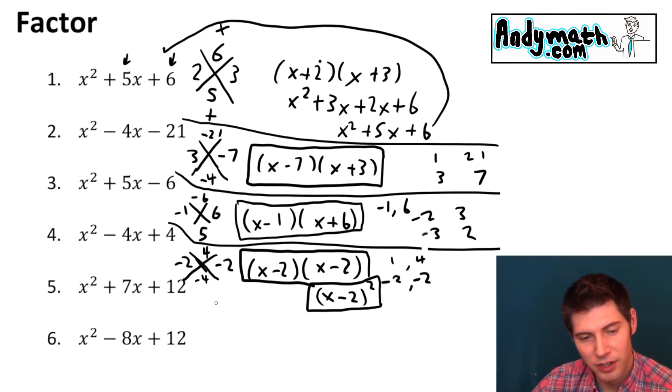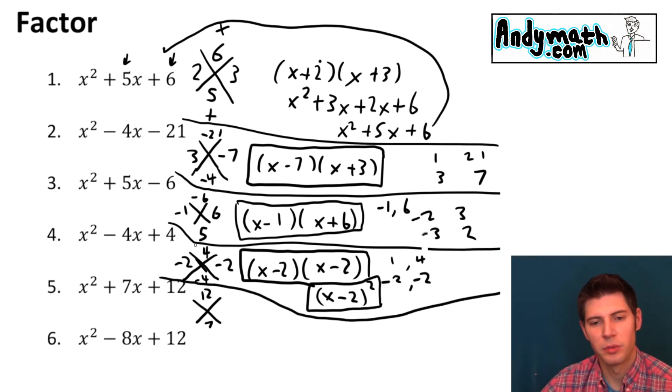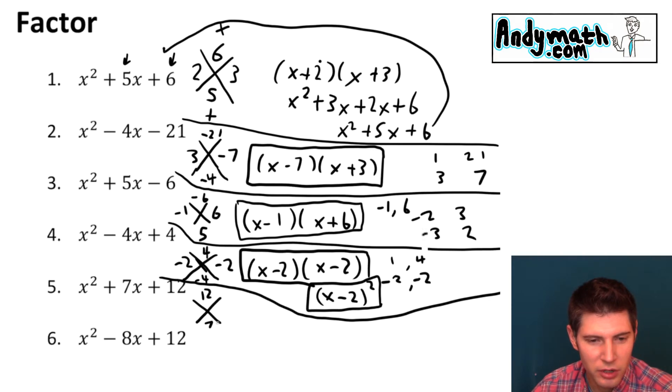Next we have a 12 and a 7. So exact same steps. Multiply to give us 12 and add to give us 7. So what are some numbers that multiply to give us 12? That would be 1 and 12. 6 and 2. 6 and 2 won't work. 3 and 4. 3 and 4. That adds up to 7.